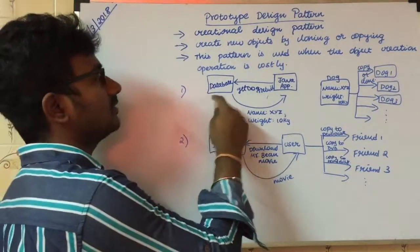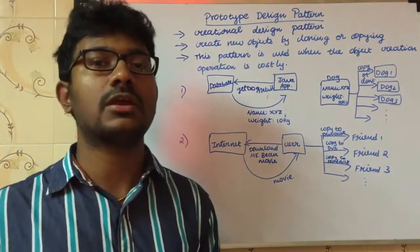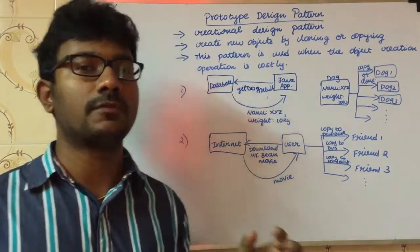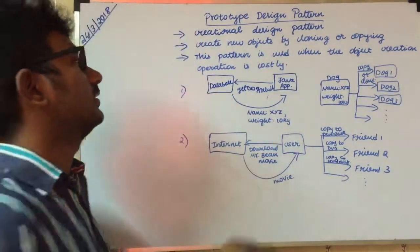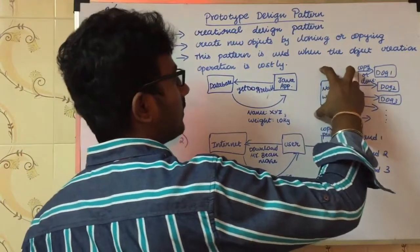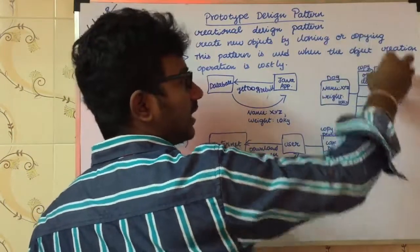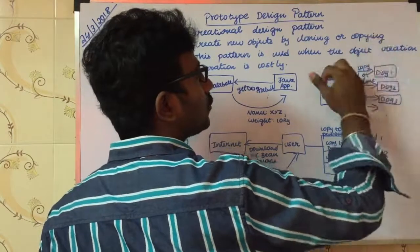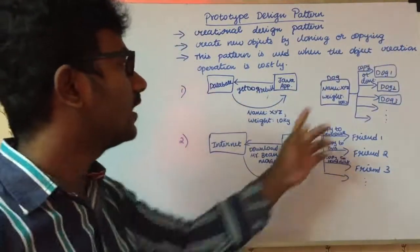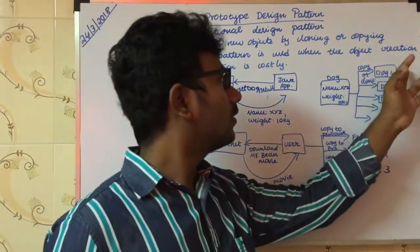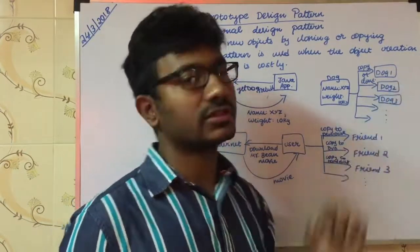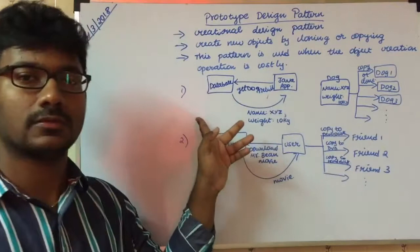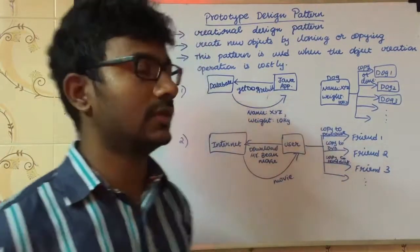Fetching from the database is a costly operation in terms of time and computation power. Instead of fetching from the database every time, if we copy the existing object, copying the object is much simpler and cheaper compared to a database call. This is the first use case.